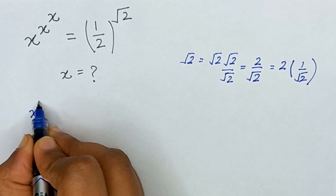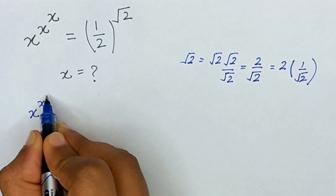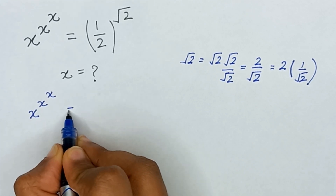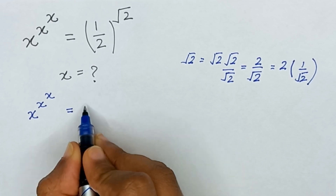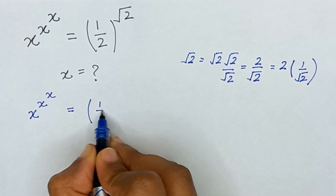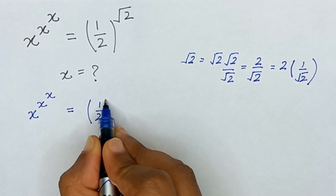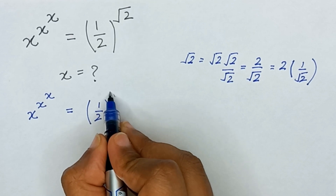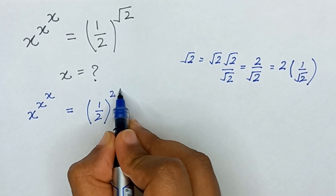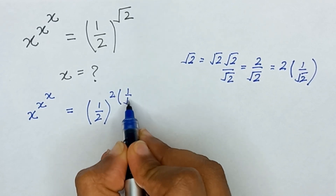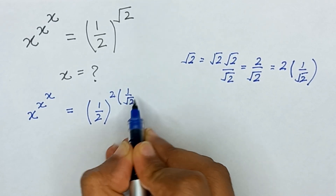So it will be: x raised to the power x raised to the power x is equal to 1 divided by 2, and its power is 2 times 1 divided by square root of 2.